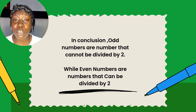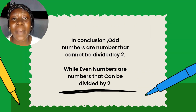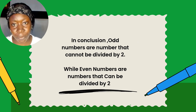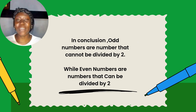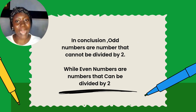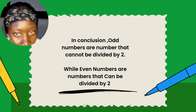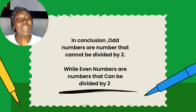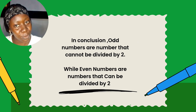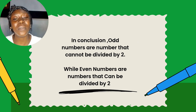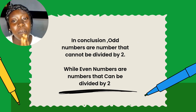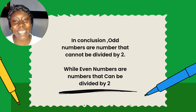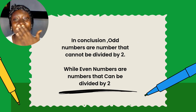In conclusion, odd numbers are numbers that cannot be divided by two. Even numbers are numbers that can be divided by two without any remainder. So thank you for having me. Thank you for joining this class. Bye.